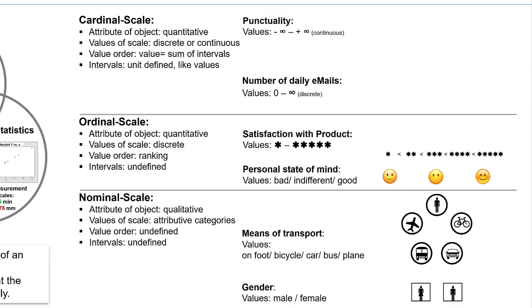On the upper level, the cardinal scale, we can reliably say that 100 emails are twice as much as 50 emails, and that two minutes are twice as much as one minute. The values can be discrete, as with the emails, or continuous, as with the time. The units of the intervals between the values are uniformly defined and can be discrete or continuous. The order of values is determined by the principle that each value represents the sum of the preceding intervals.